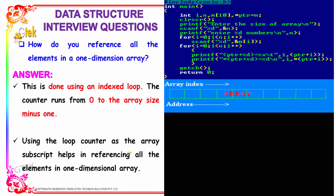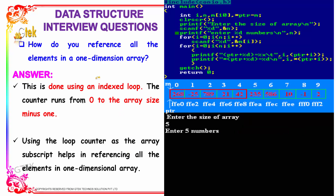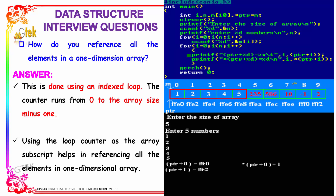Our next question is: how do you reference all the elements in a one-dimensional array? It is done using an index loop. The counter runs from 0 to the array size minus 1, because the starting index is 0. The loop counter as the array subscript helps in referencing all the elements of the array in a one-dimensional array. Here, the loop goes on with the pointer moving as the array index increases.